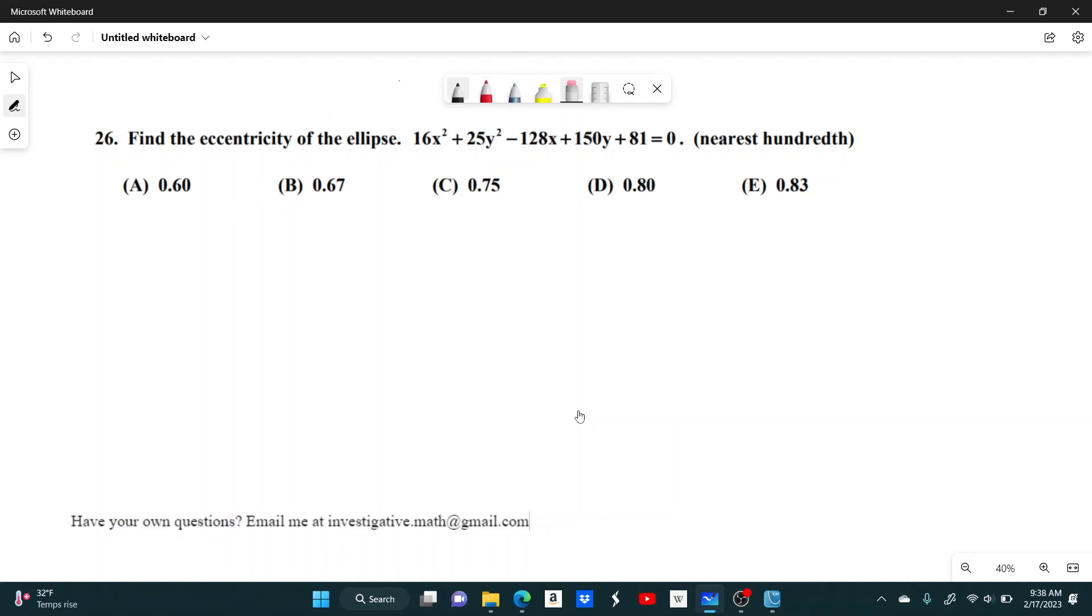So the first thing we're going to have to do is get this into the standard form of an ellipse. The standard form is very similar to the standard form of a circle. You're still going to have this x minus h squared plus y minus k squared, but now these are both going to be divided by these numbers a and b. And it's all going to equal 1 in the end.